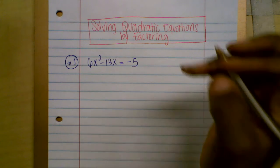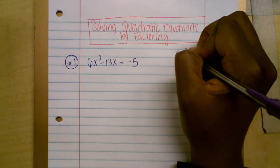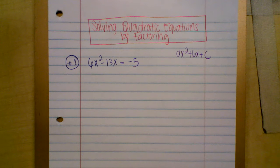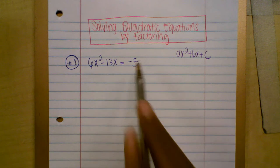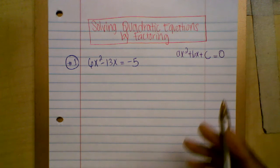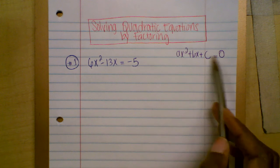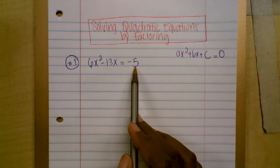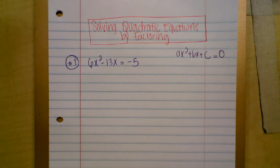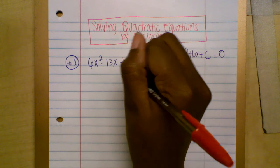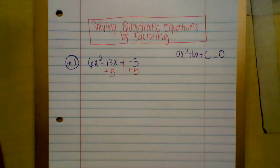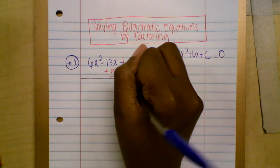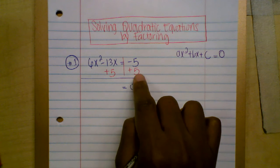Standard form means writing it as ax squared plus bx plus c. Here you have a negative five on the right side, and the right side needs to equal zero. So what number do you add to negative five to make it zero? You add five on both sides. Negative five plus five equals zero, so the right side is now zero.